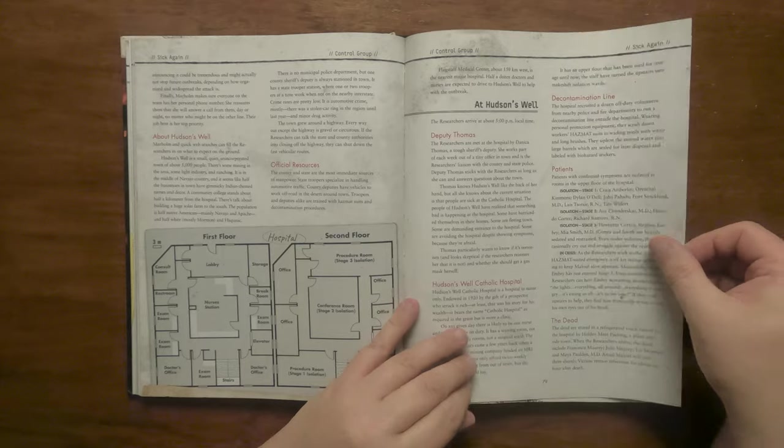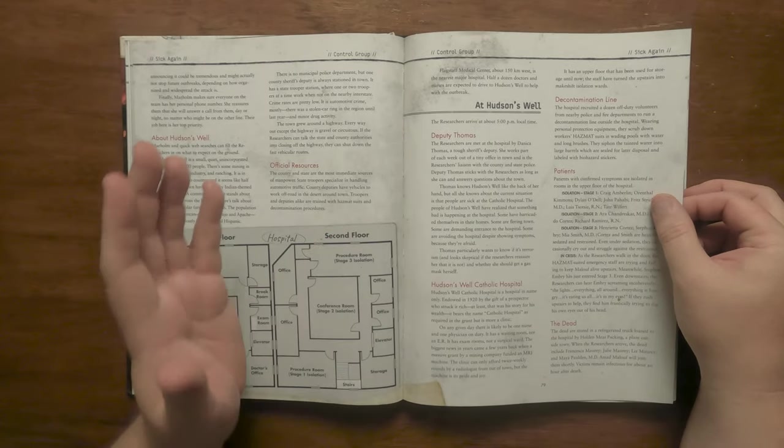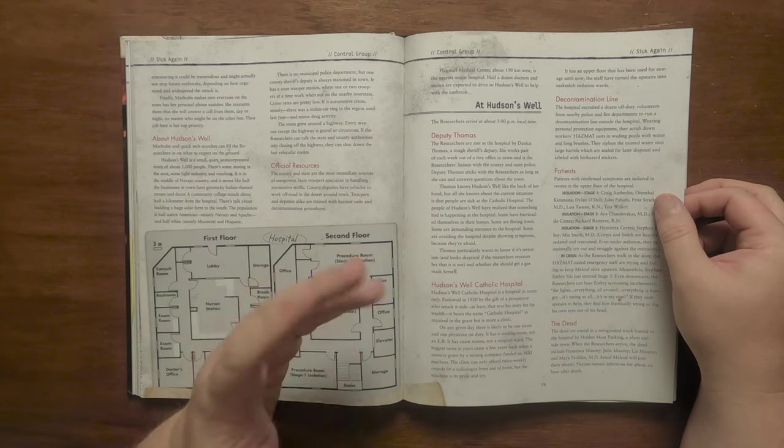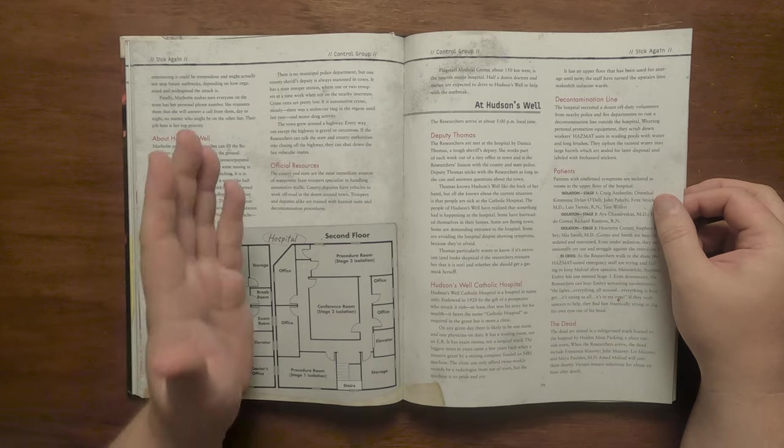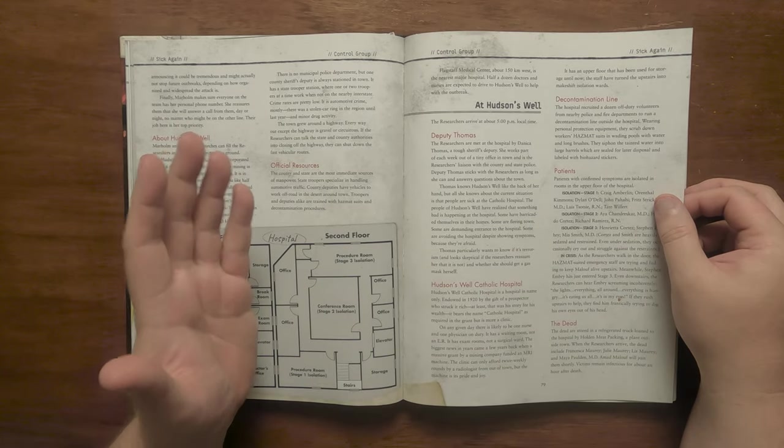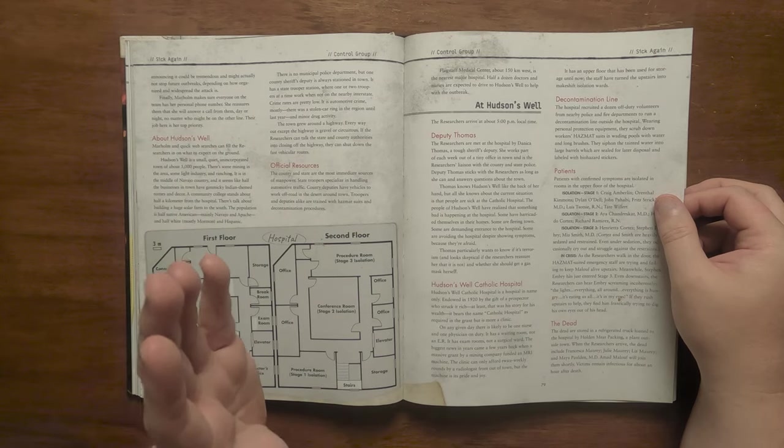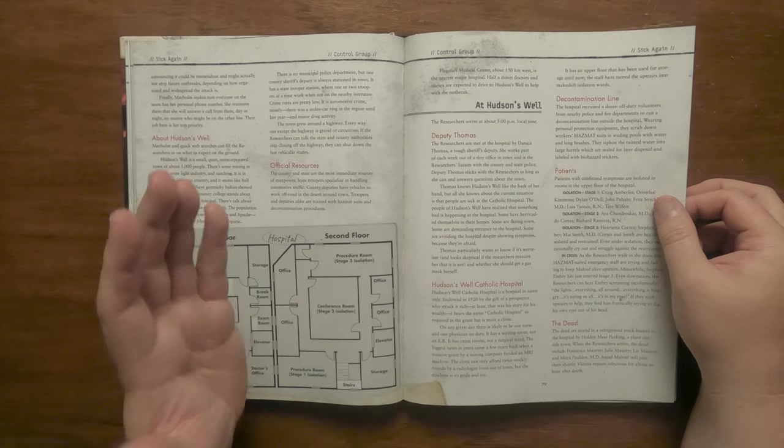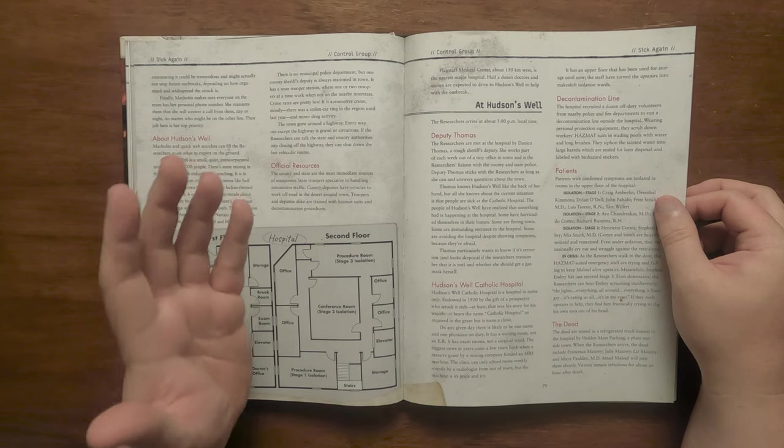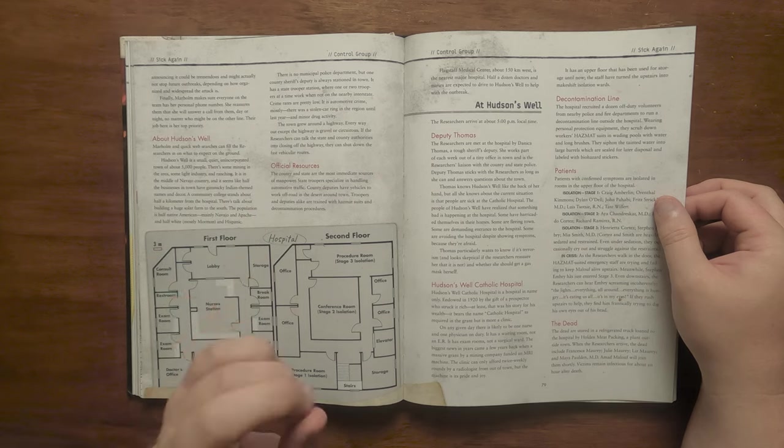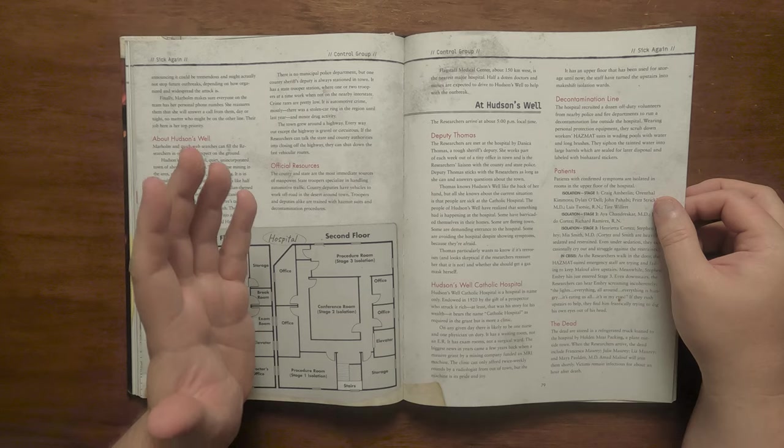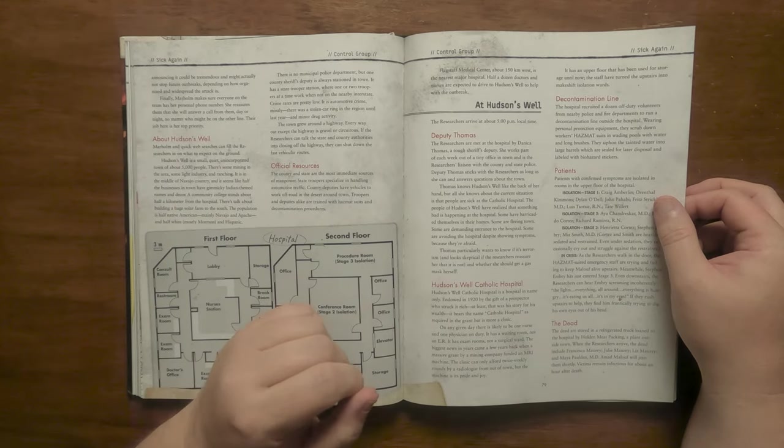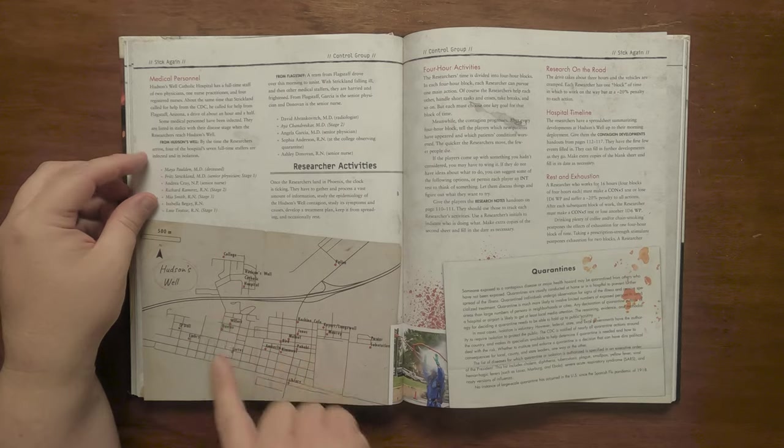The hospital itself, with floor plans here, is only one in name. It was gifted by a rich prospector in 1920 and is more a clinic than anything else. There's usually one nurse and doctor on duty on any given day and it doesn't have an ER or surgical ward. A few years ago a mining company bought them an MRI machine, though the radiologist who operates can only do so twice weekly. The upper floor is normally used for storage. They have a decontamination line manned by off-duty volunteers outside the hospital, fully equipped with hazmat suits and the like. There are a number of patients of various stages of infection in isolation zones and as they set foot in the hospital they can hear a patient at stage 3, Stephen Embry, screaming about being surrounded by lights and something trying to eat his eyes. Everyone who has died are stored in a refrigerated truck being loaned from a meat packing plant outside of town. It gives us a rough map of Hudson's Well showing all the important places in the scenario and then talks about the medical staff here.